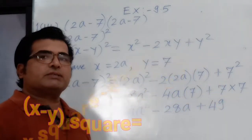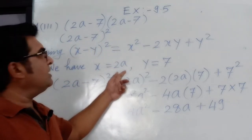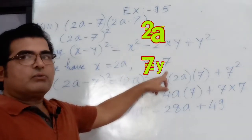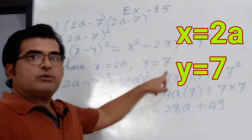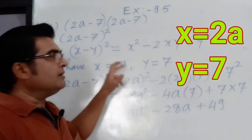So here we have x equals to 2a and y equal to 7. Remember, it is not minus 7. Already we are using minus in the identity, so we should not write the value of the number as negative.